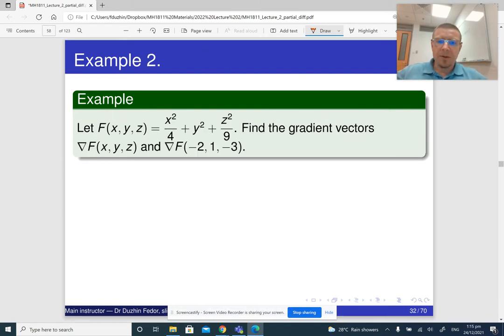Another example with three variables. To find the gradient vector, we need to find all the partial derivatives. The partial derivative of f with respect to x: just the first term depends on x, so it's 2x over 4, which is x over 2. Partial derivative with respect to y is 2y. And the partial derivative of f with respect to z is 2z over 9.